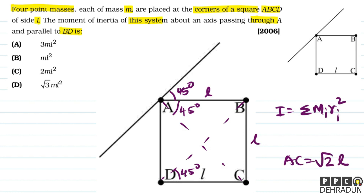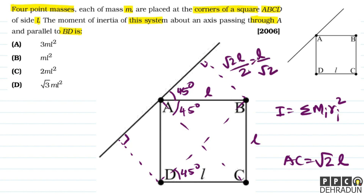इसी तरीके से, अगर मैं D से इस axis पर perpendicular drop करूँ और B से भी perpendicular drop करूँ, तो यह length diagonal का आधा हो जाएगा — मतलब root 2L का आधा, that is L/√2। तो particle B और particle D की दूरी axis से L/√2 है, और particle C की दूरी axis से root 2L है।